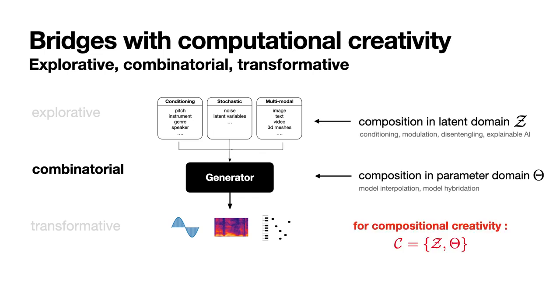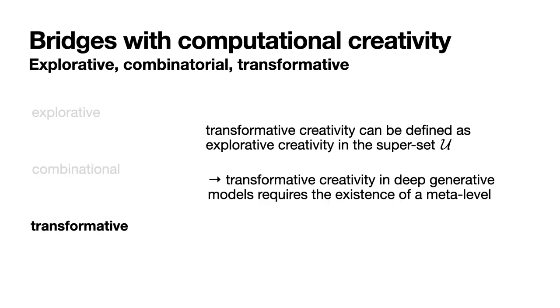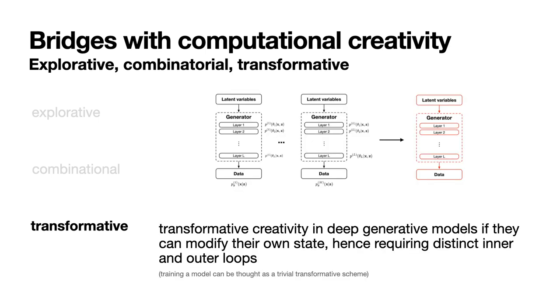Hence, for compositional creativity, our conceptual space can be both Z or theta. Regarding transformative creativity, it is a little more peculiar to define. Arguing that transformative creativity can be defined as an exploratory creativity in the superset U, transformative creativity in deep generative models requires the existence of a meta-level. Hence, models can be deemed to have transformative creativity if they can modify their own state, hence requiring a distinct inner and outer loop, requiring a meta-learning optimization scheme.